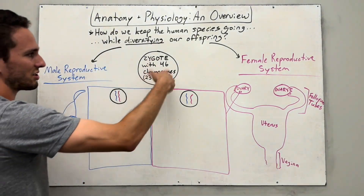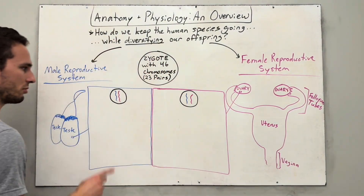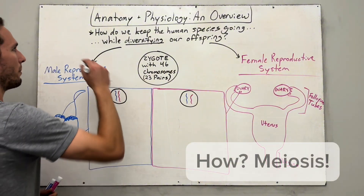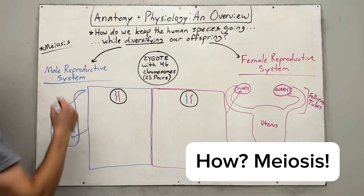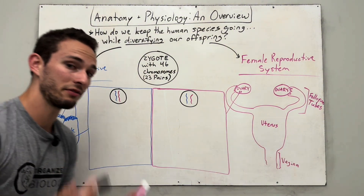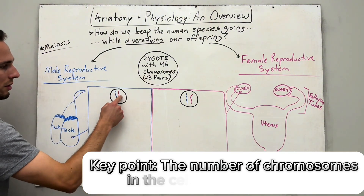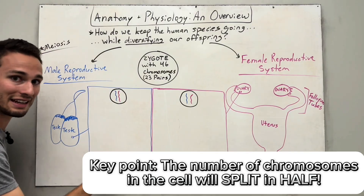In order to diversify all these chromosomes, we're going to go through a process called meiosis. Meiosis is a type of cell division where the number of chromosomes that we start with will actually split in half.